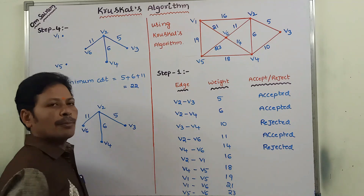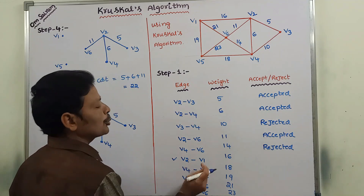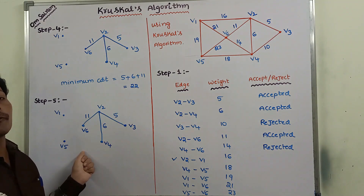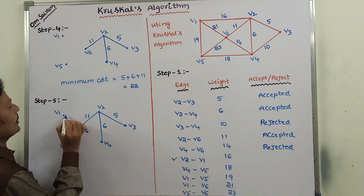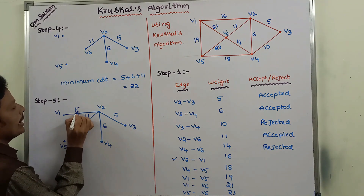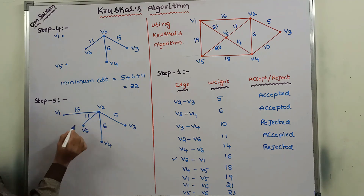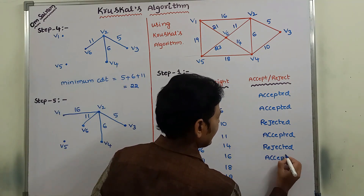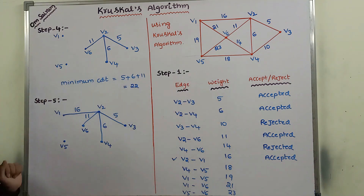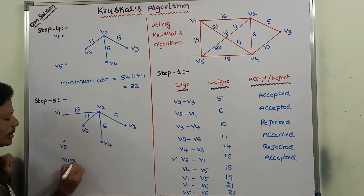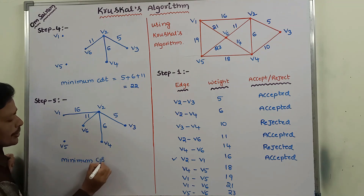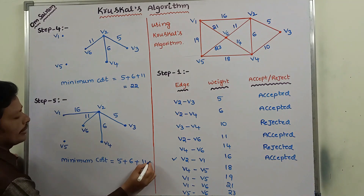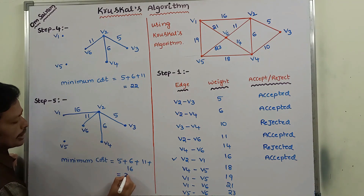Next, the minimum weight edge is V2 to V1, weight 16. This can be added to the spanning tree without forming a cycle. After adding this edge, is any cycle formed? No, there is no cycle formed. So this edge is accepted. The minimum cost of the spanning tree is now 5 plus 6 plus 11 plus 16, which is 38.